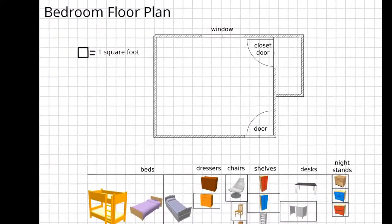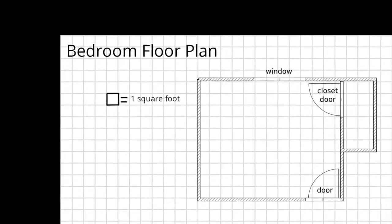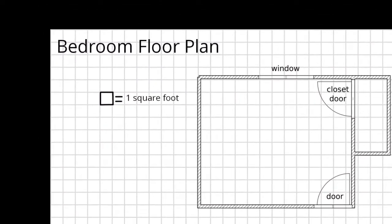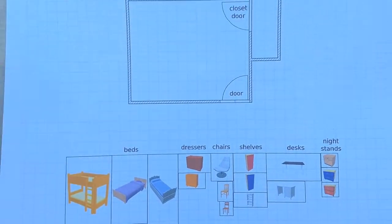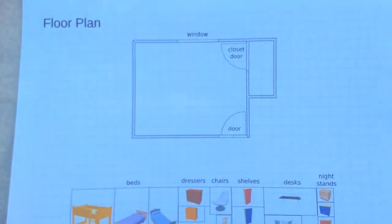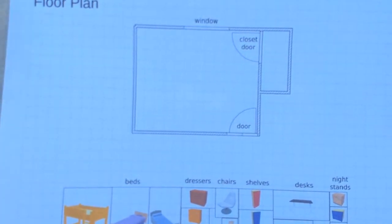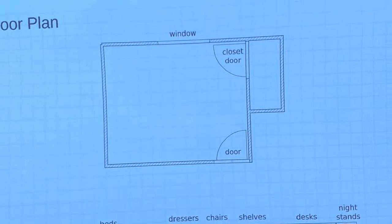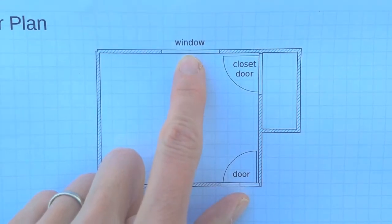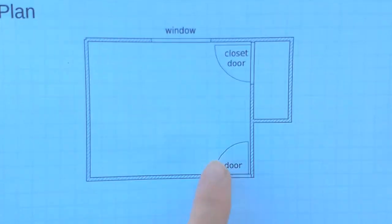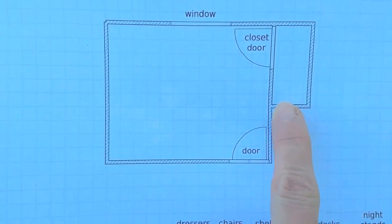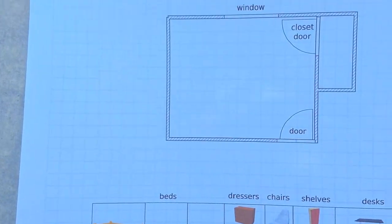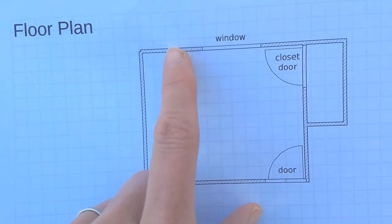Here's the floor plan of a bedroom. On this floor plan, one square equals one foot, so we know how much space all this furniture will take up. Just like on the other floor plan, we have windows, we have doors, and this door here is going into this closet. We can tell how big the room is by counting the squares.